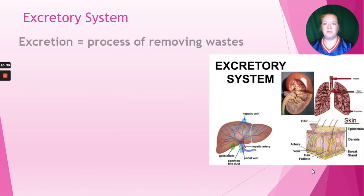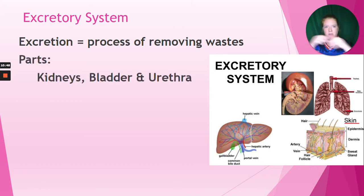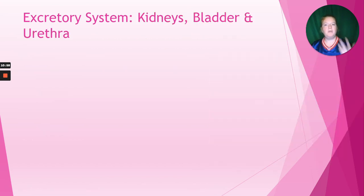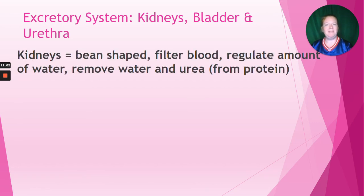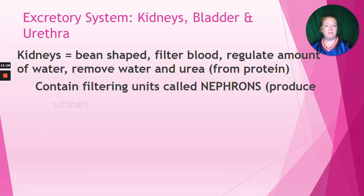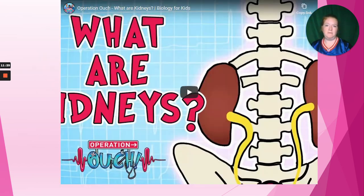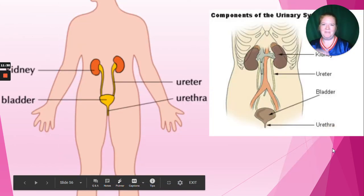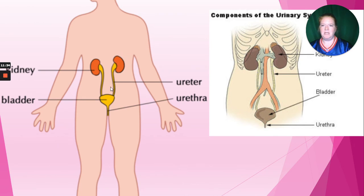Now we're going to talk about the excretory system. The process of excretion means removing wastes. The parts include the kidneys, bladder, and urethra, as well as the lungs, skin, and liver. The kidneys are bean-shaped - we have two of them. They filter blood, regulate the amount of water, and remove water and urea. Urea comes from the breakdown of protein. They contain filtering units called nephrons that produce urine. The bladder stores urine, and the urethra is the tube where urine leaves the body.